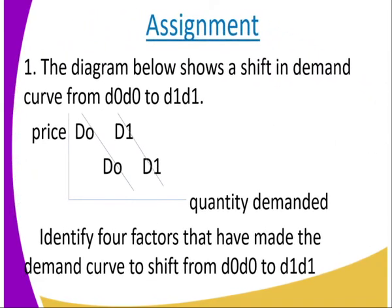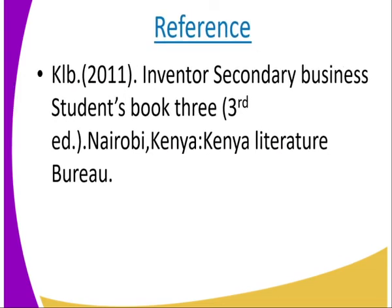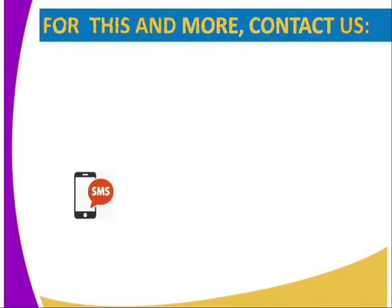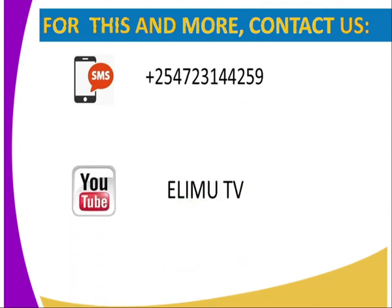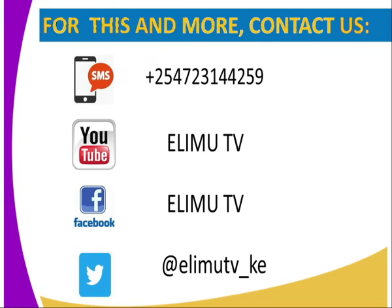Activity: the diagram illustrates a shift in the demand curve from D0 to D1. Reference: KRB 2011, Secondary Business Student Book Three, Third Edition. You can get us through SMS, YouTube, Facebook, or Twitter. Stay tuned to Edim TV. Thank you.